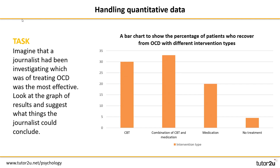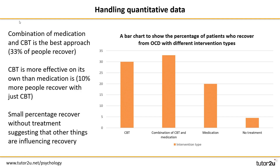One more task to finish your introduction to psychopathology. In the exam you can also achieve AO2 credit for things like handling data, and this exam-style question is quite typical of what can be asked in the context of psychopathology. Pause for five minutes, read the question, and spend some time drawing conclusions from the graph on the screen. Here are a couple of examples: the combination of medication and CBT is the best approach, with 33% of people recovering; CBT is more effective on its own than medication is; and a small percentage recover without treatment, suggesting other things are influencing recovery. Overall, in these types of questions, keep focused on the conclusions drawn rather than just the data.